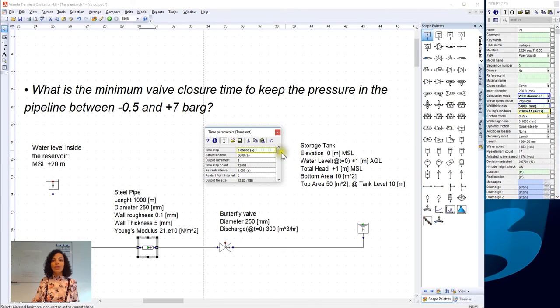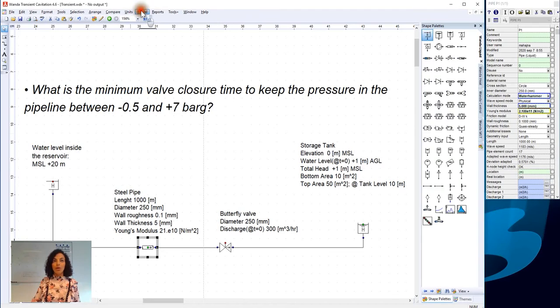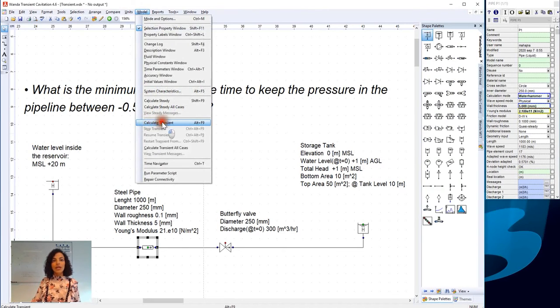Now, we need to update the simulation time of our model. So, we want 20 seconds. Now, we can run our model. Calculate transient.